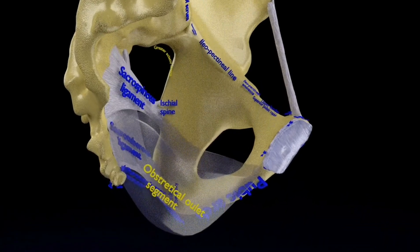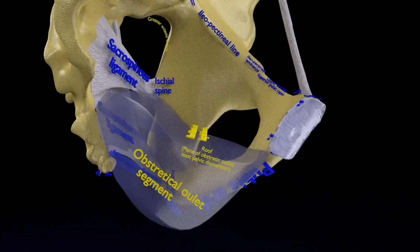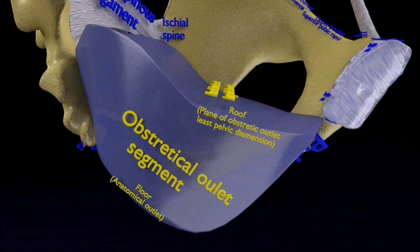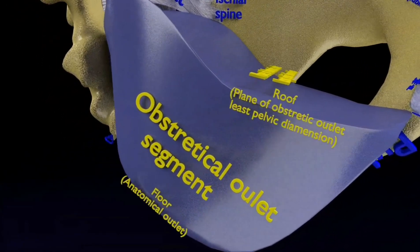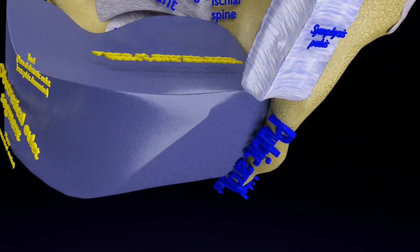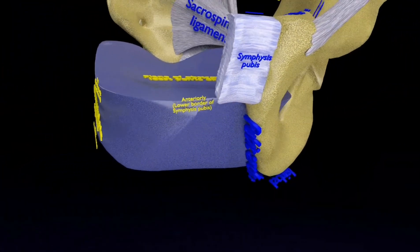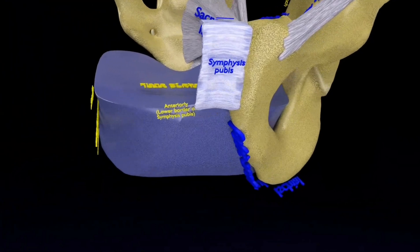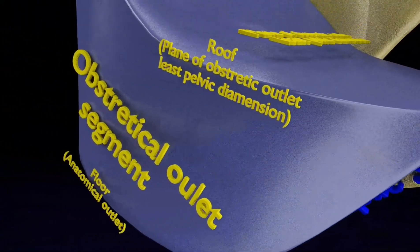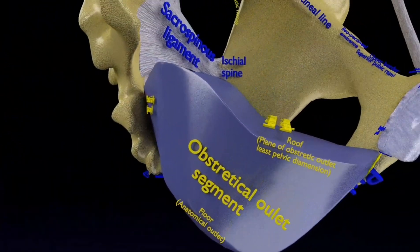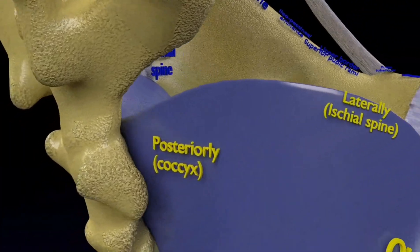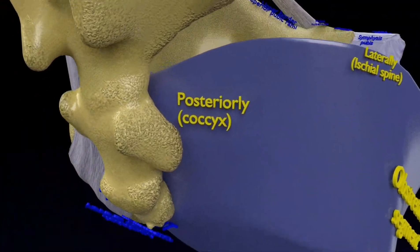The obstetric outlet is a segment whose boundaries are: the roof is the plane of least pelvic dimensions, the floor is the anatomical outlet, anteriorly the lower border of the symphysis pubis, laterally the ischial spines, and posteriorly the coccyx.